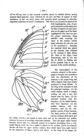Crenulate: adjective, scalloped; describes the outer edge of a wing that is convex at the end of each vein and concave in between.